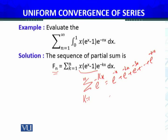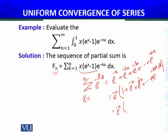Now I take e^(-x) as common factor, giving e^(-x) · (1 + e^(-x) + e^(-2x) + ... + e^(-(n-1)x)). This is a geometric series with common ratio r = e^(-x). We know the sum of such a series is (1 - r^n) / (1 - r), so the sum equals e^(-x) · (1 - e^(-nx)) / (1 - e^(-x)).